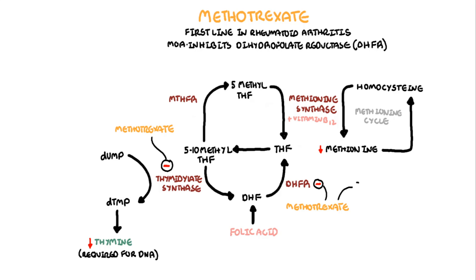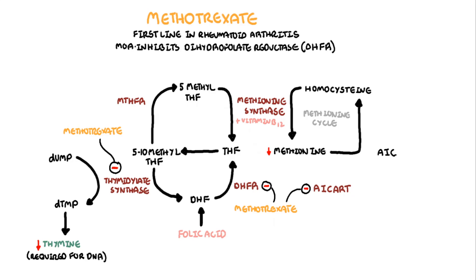Methotrexate also inhibits the enzyme aminoimidazole-carboxamide-ribonucleotide-formyltransferase, also known as AICART. This enzyme is important in the conversion of AICAR to IMP, a precursor to purines — adenine and guanine — which are required for RNA and DNA synthesis.